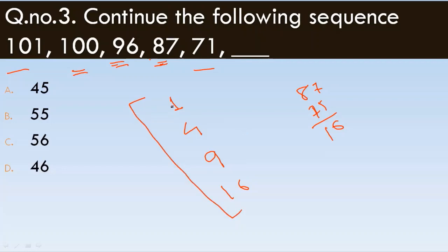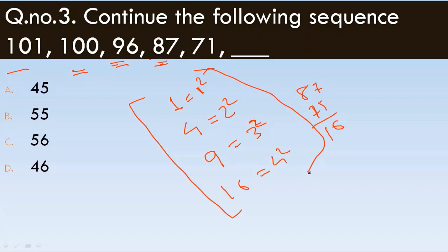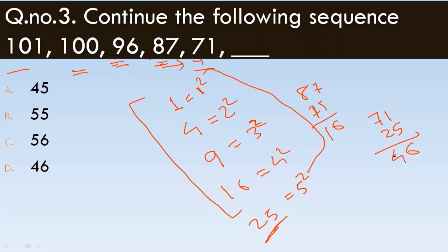The differences follow a square pattern: 1 is 1 squared, 4 is 2 squared, 9 is 3 squared, 16 is 4 squared. So the next difference should be 5 squared, which equals 25. Therefore, 71 minus 25 equals 46. The answer to this question is 46.